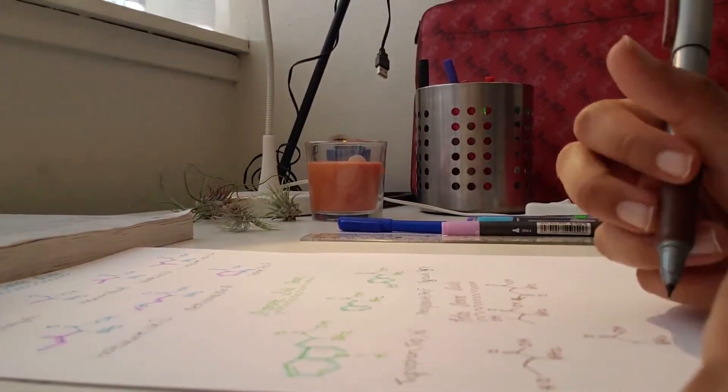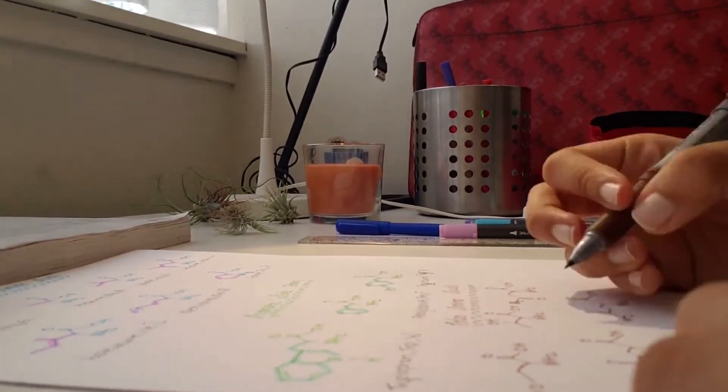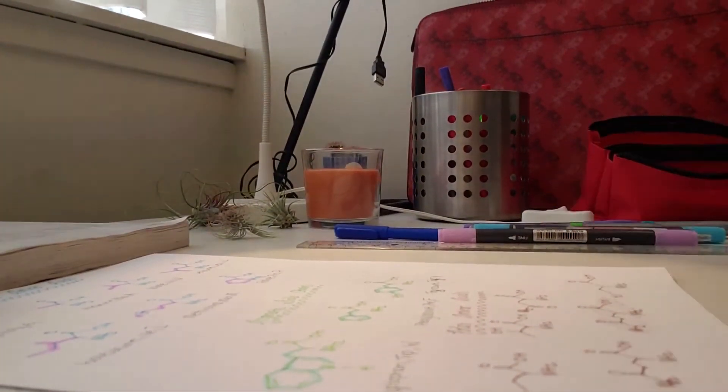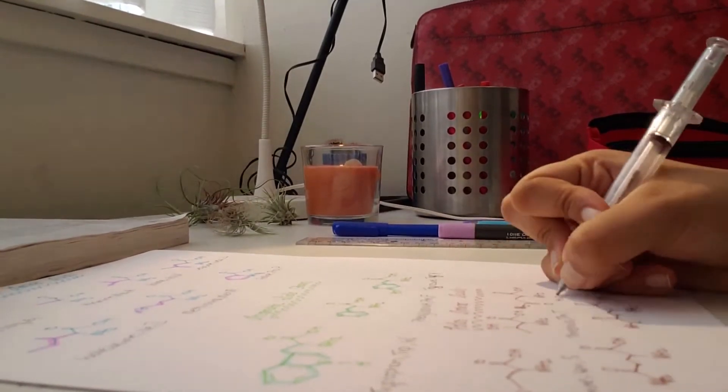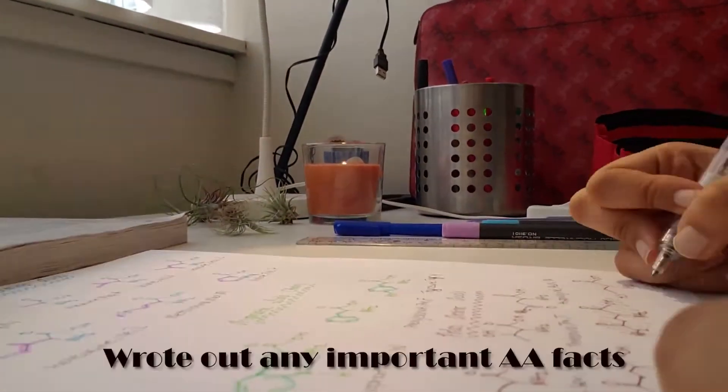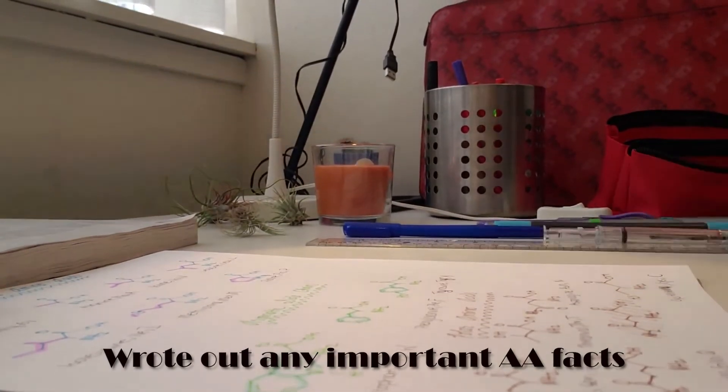I also wrote out any important amino acid facts on the sheet. Here I'm writing how all amino acids are chiral except for glycine, and that all amino acids are in the S absolute configuration except for cysteine.